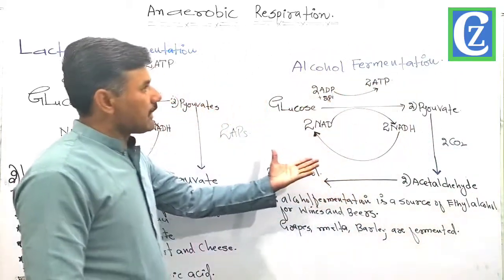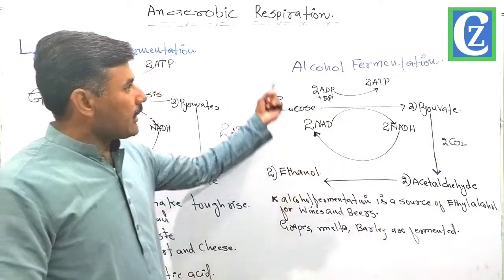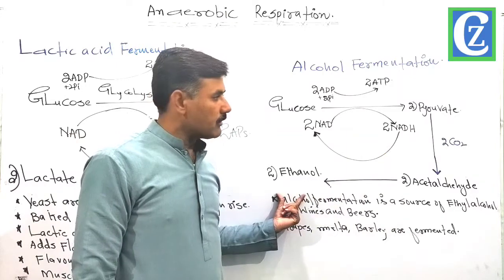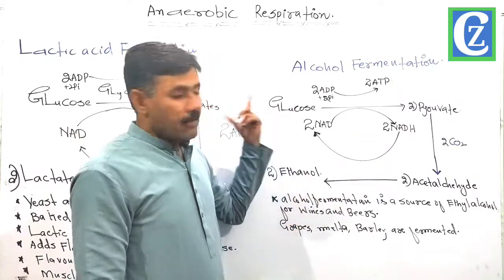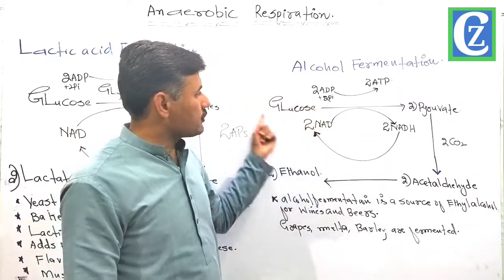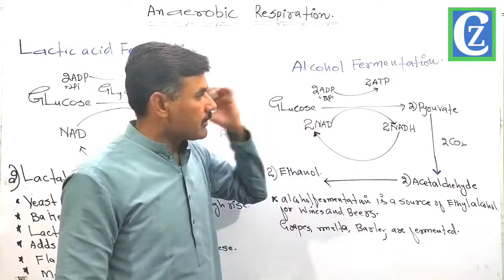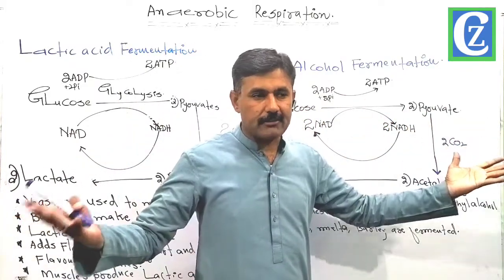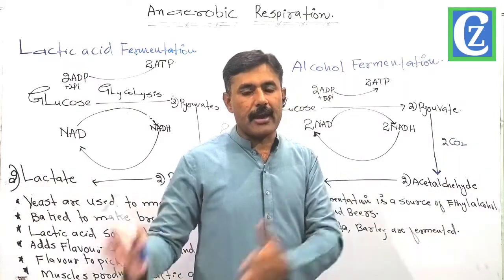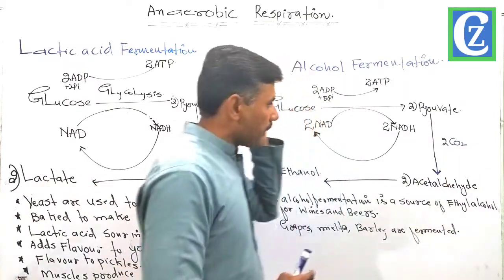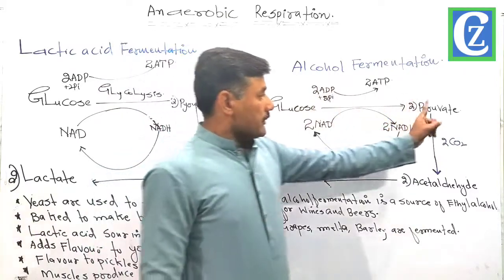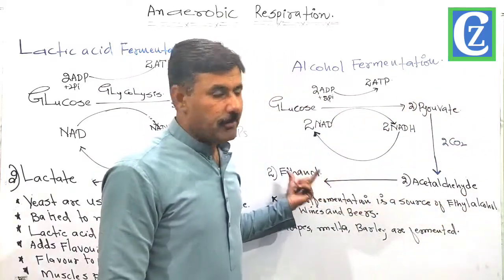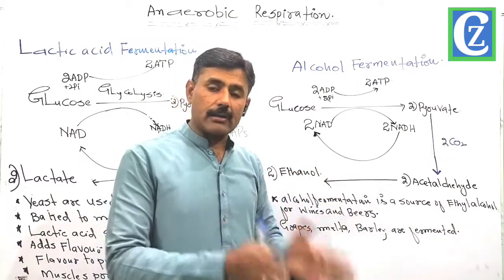Another process is called alcohol fermentation, where we convert pyruvates into ethanol. The first process is again common — we convert a molecule of glucose into two molecules of pyruvates by glycolysis, which is common to both aerobic and anaerobic respiration. These two pyruvate molecules then convert into ethanol by a process called alcohol fermentation.